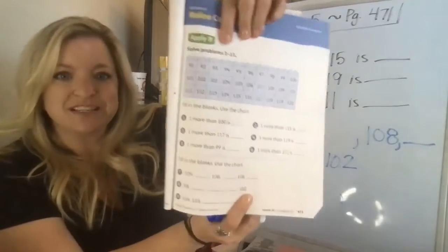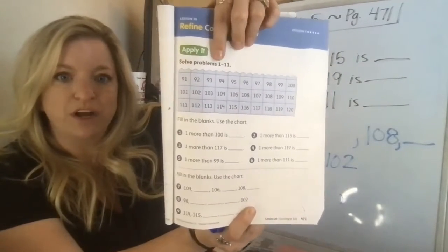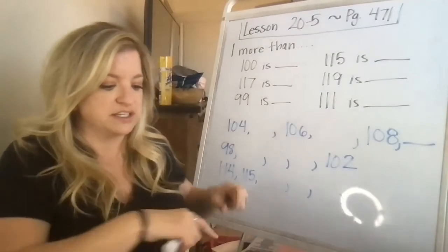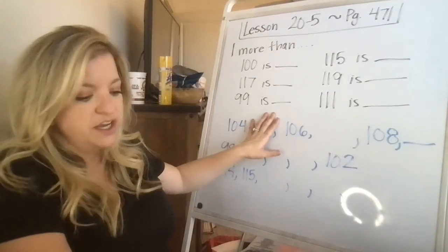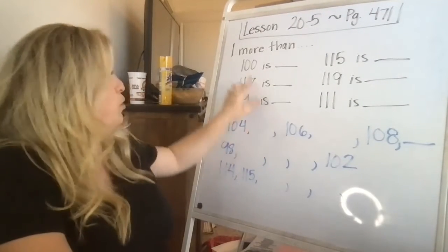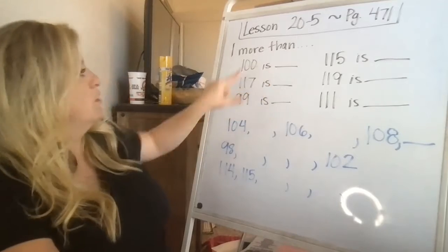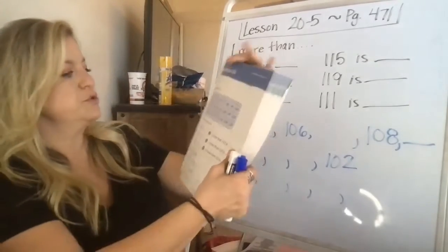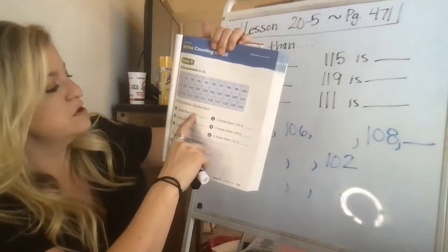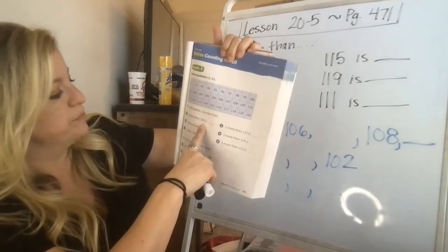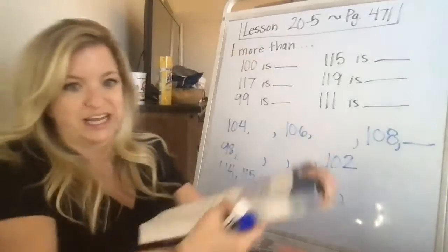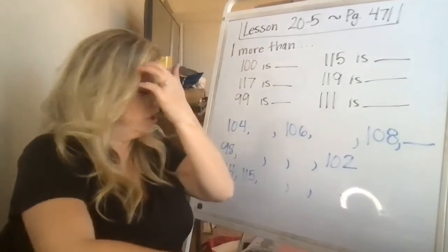So this is the page that we're on. You're going to use this hundreds chart to solve problems 1 through 11. So I've written the problems up here. It says fill in the blanks, use the chart. It says one more than 100 is, one more than 117 is. So what they want you to do is use your finger if you need to and find 117, for example, and move one spot and you'd be at 118. You're just adding one on.